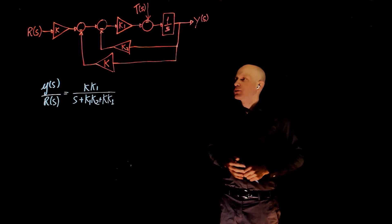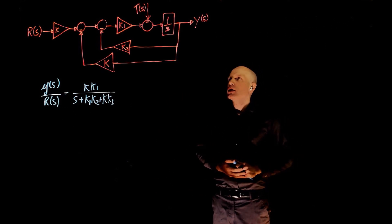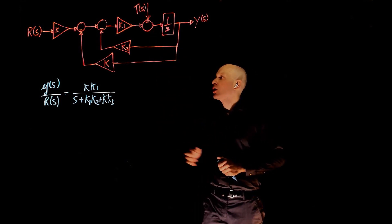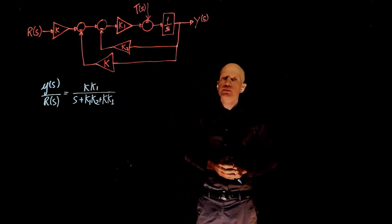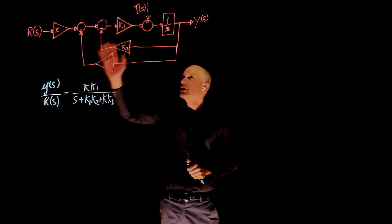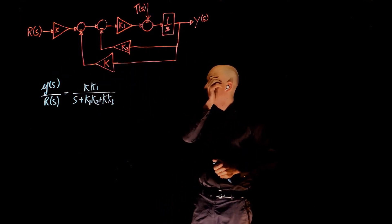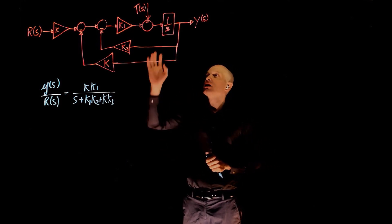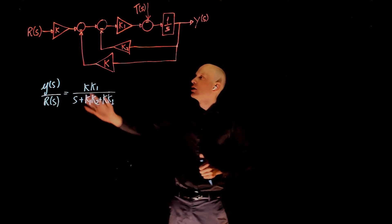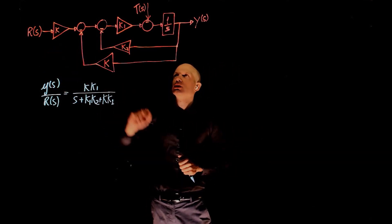In the second part of this problem, we are interested in the steady state error to a step input of t of s when r is set to zero. This means that we want the output to go to zero, so we set r to zero, but there is a disturbance acting on the system. We want to see what is the effect of that disturbance in the output and how much it deviates from the ideal output, which is zero.